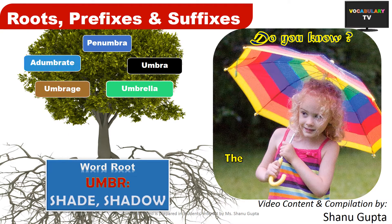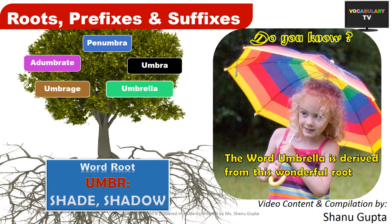Welcome to our 9th video on World Roots Illustrated. The theme for this video is the Latin root Umbra, which means shade or shadow. One of the most celebrated words based on this root is umbrella, which we use in our everyday lives to protect us from sunlight and intense rain under its so-called shade.